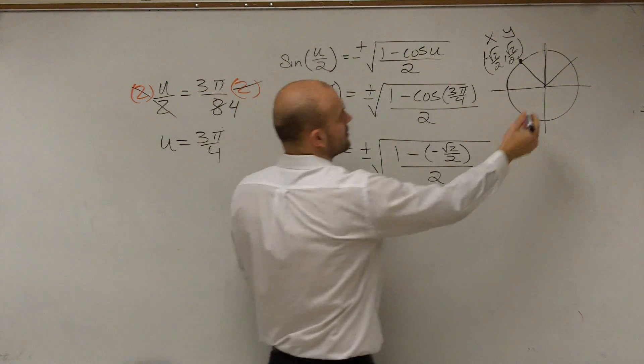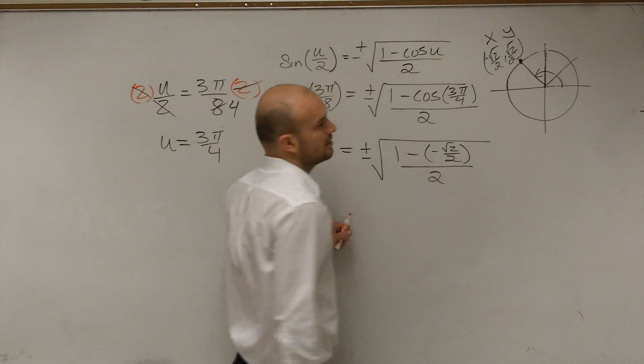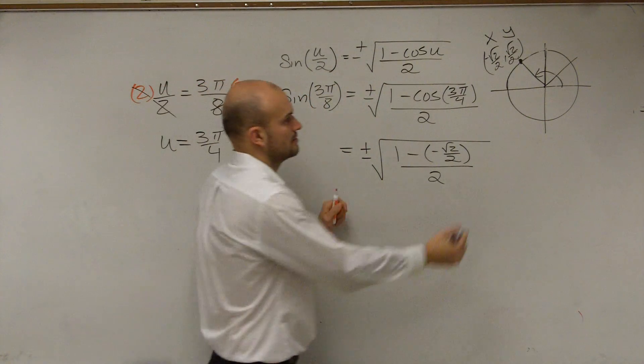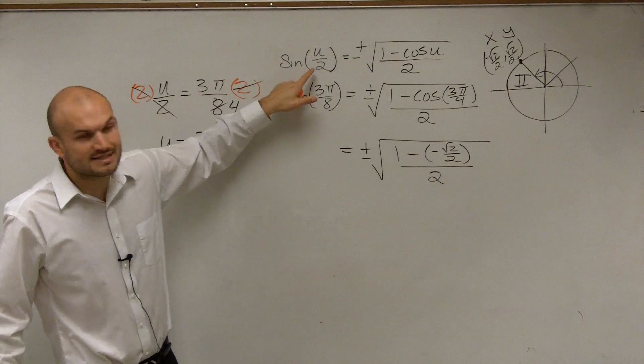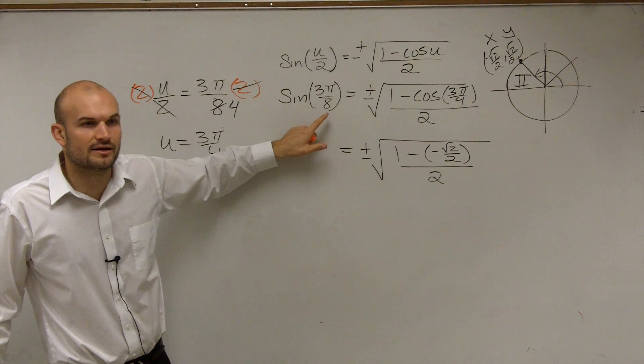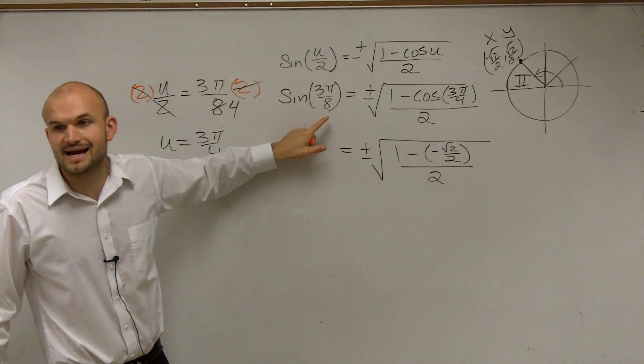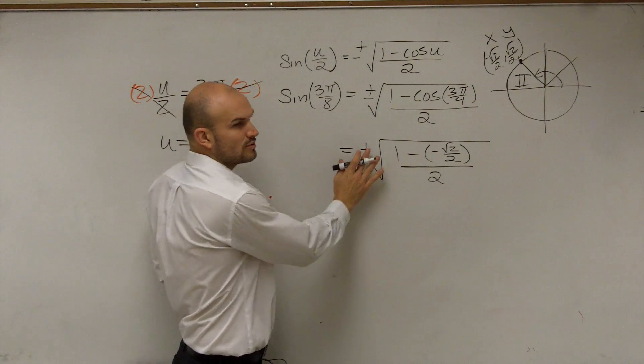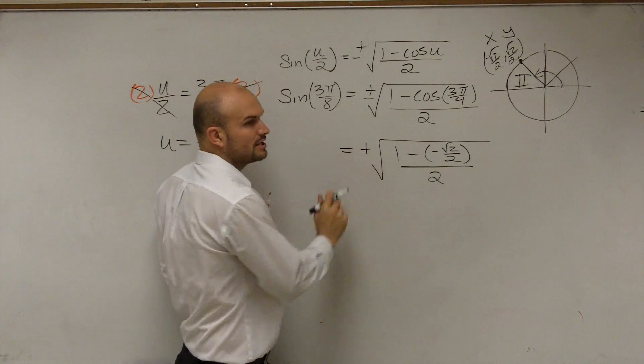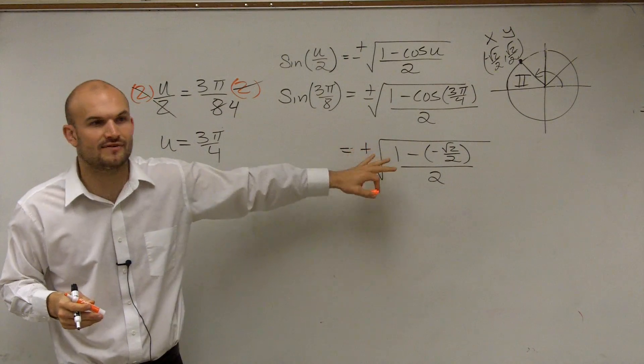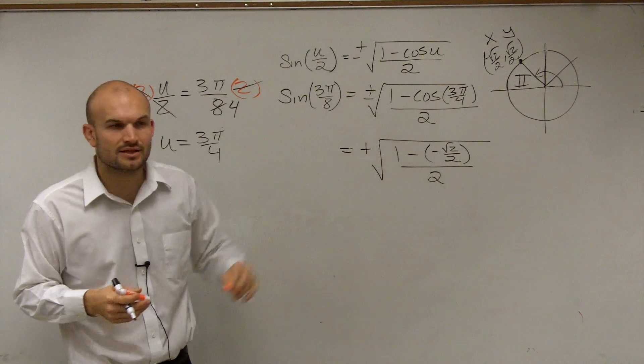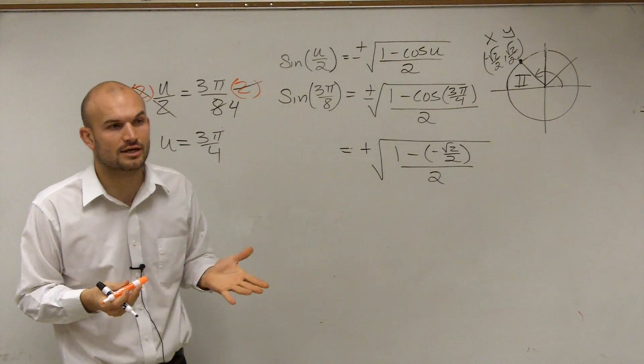Then the next thing is notice our angle. Our angle is in the second quadrant. In the second quadrant, is the sine of an angle positive or negative? Is the sine of the angle positive or negative? It's positive. It's positive. So instead of doing the plus or minus, we're only going to be working with the positive value. So we're not going to include the negative value, because we're only concerned about the positive value, because our angle is in the second quadrant.